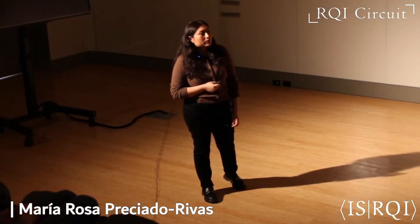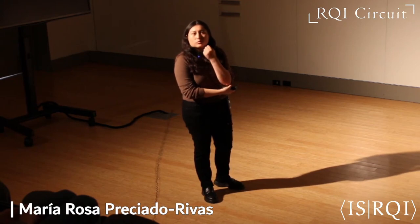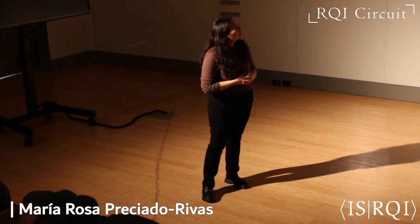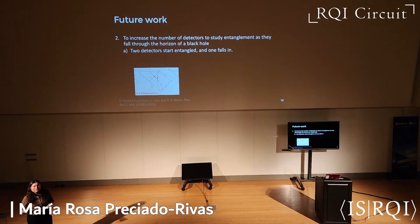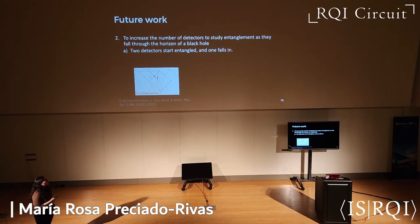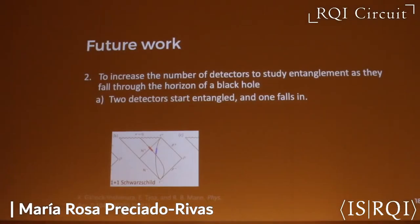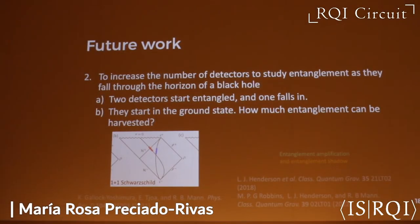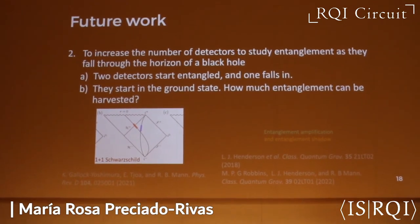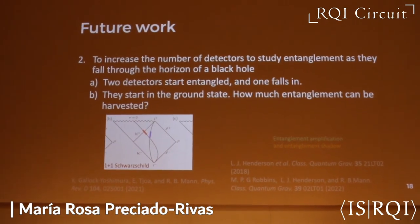We also want to study what happens when we increase the number of detectors. In the first case, we want to look at two detectors that start entangled and then one falls in, which is similar to work made by Ken, Erickson, and Rob — but in that case they considered just a (1+1)-dimensional metric. We also want to look at when two detectors start in the ground state and examine how much entanglement can be harvested from the field.